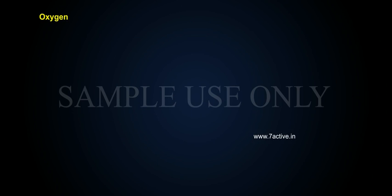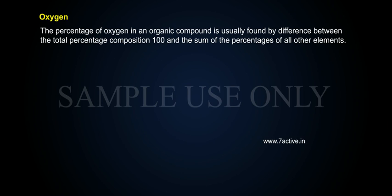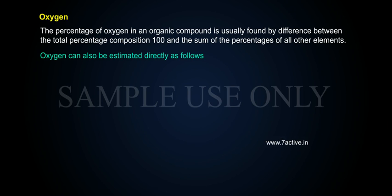Oxygen. The percentage of oxygen in an organic compound is usually found by difference — between the total percentage composition (100) and the sum of the percentages of all other elements. Oxygen can also be estimated directly as follows.